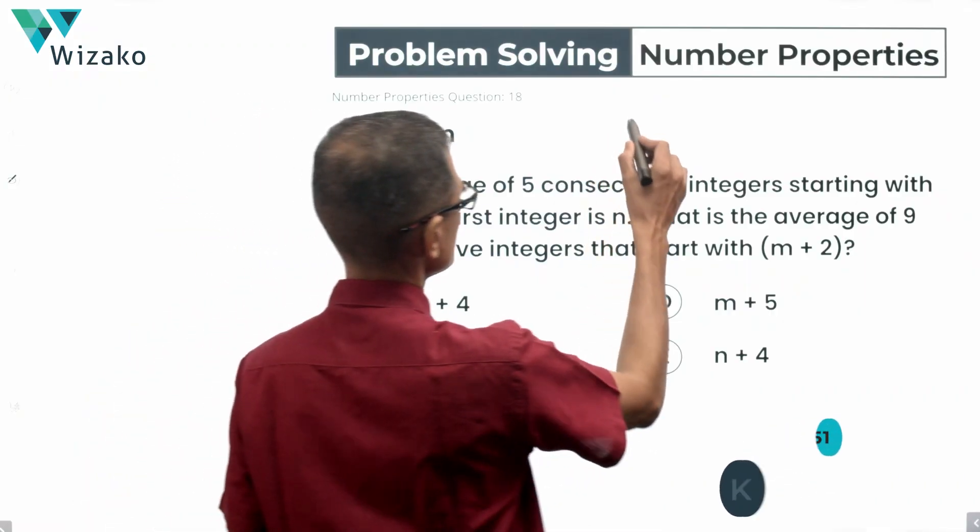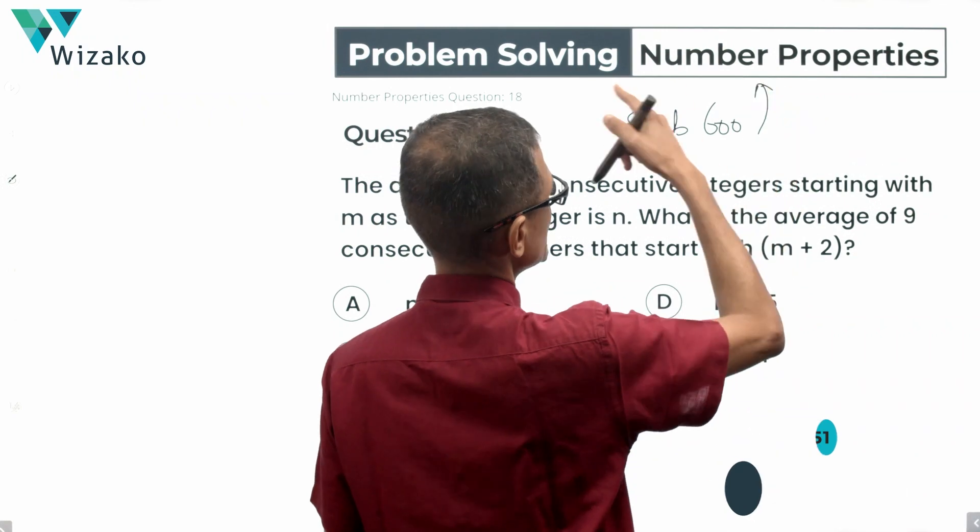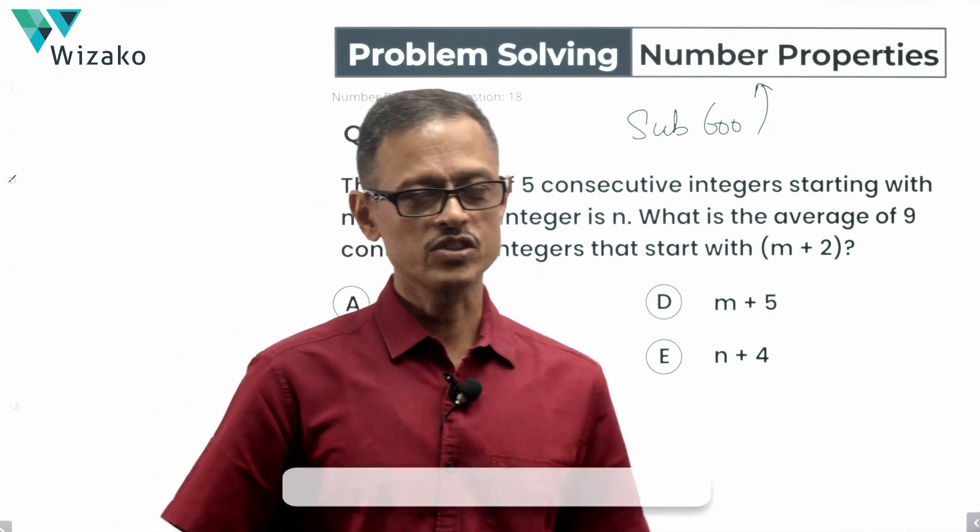Hi all, this is an easy question. I will classify the question as a sub 600 level problem-solving question in number properties. We are also looking at averages. So averages and statistics concepts are also thrown into this question.